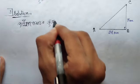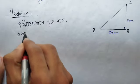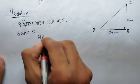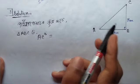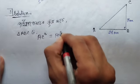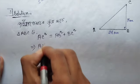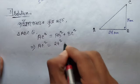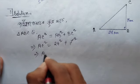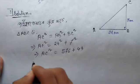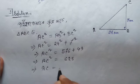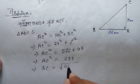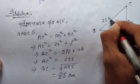By Pythagoras theorem: AC square is equal to AB square plus BC square. So AC square equals 24 squared plus 7 squared, which is 576 plus 49. AC square is equal to 625, therefore AC is equal to 25 cm.